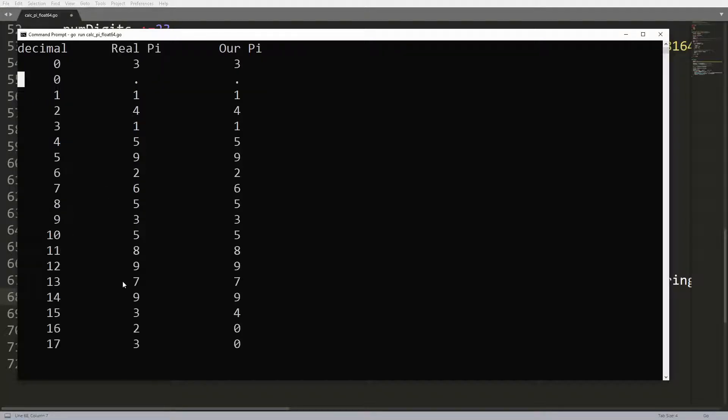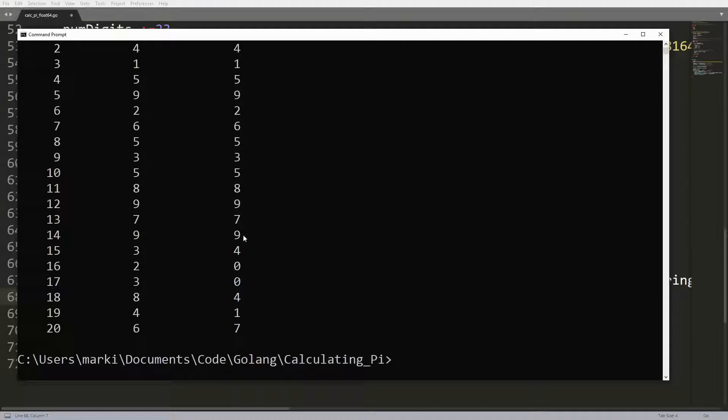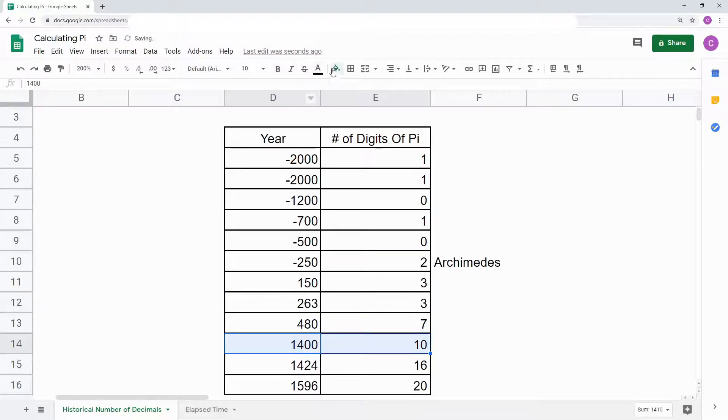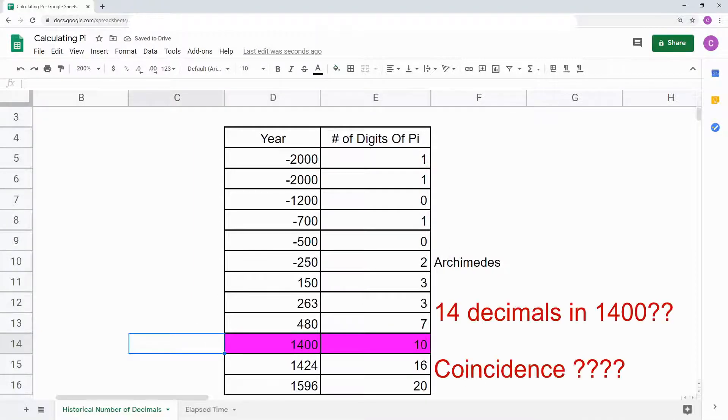Well, perhaps you see the same problem that I do. Our pi versus the real pi match up to 14 decimals, and after that they're different. Looking back at history, 14 decimals is about how many they knew back in 1400, so it's not that impressive. Truthfully, I expected something like this to happen.